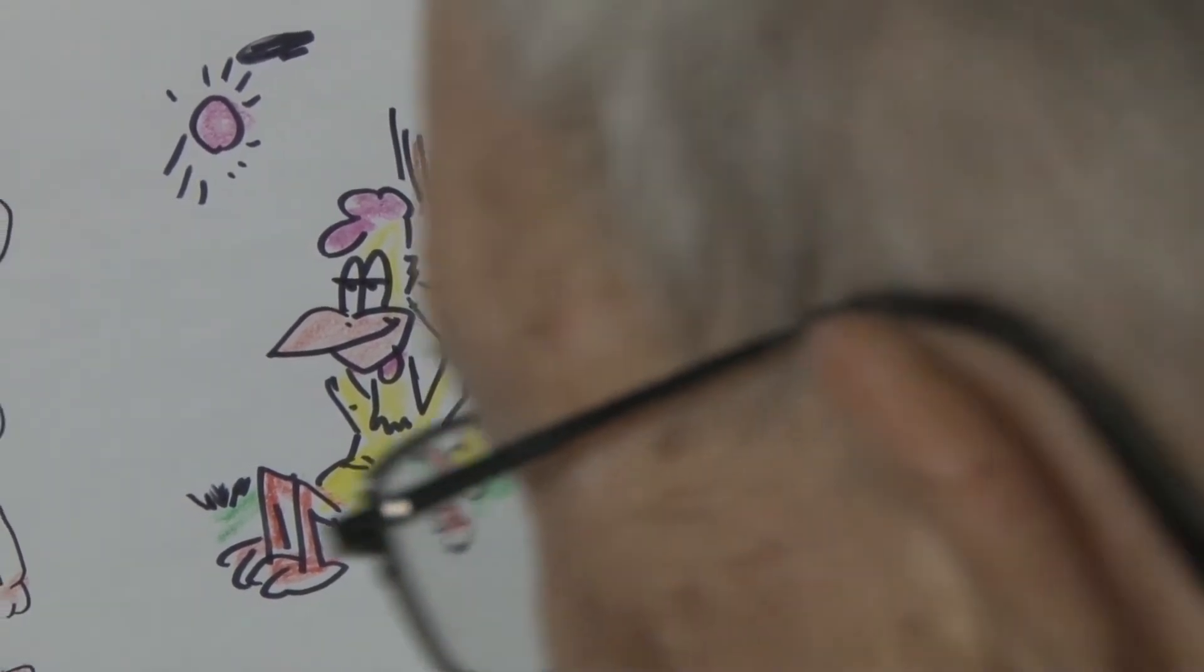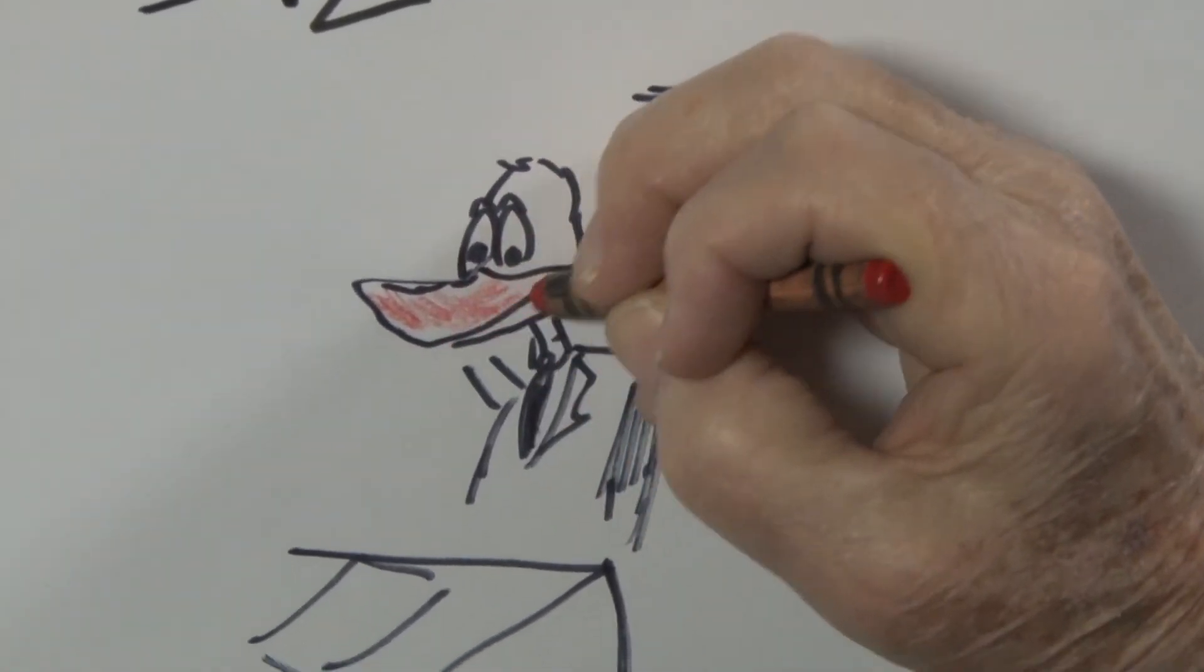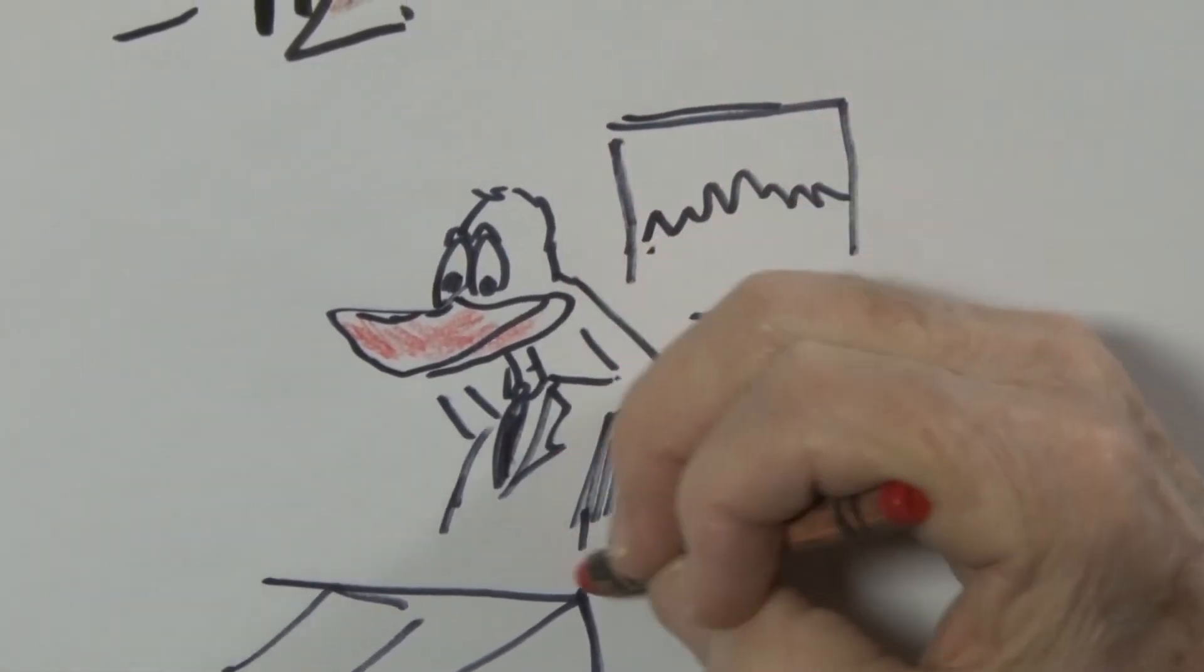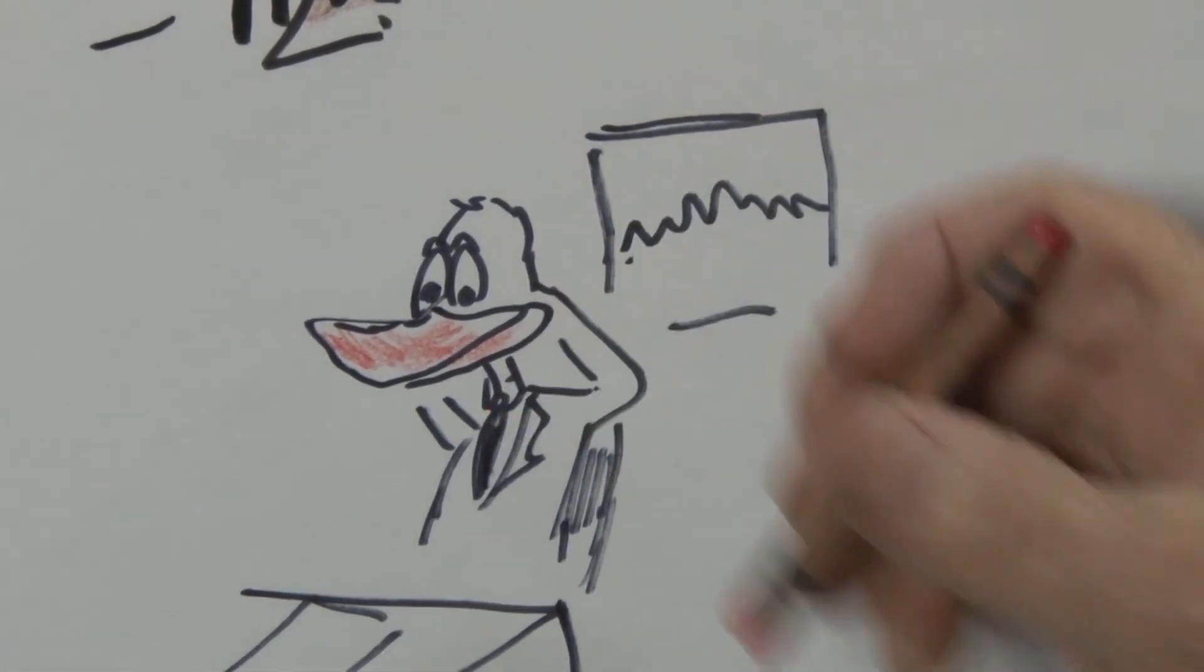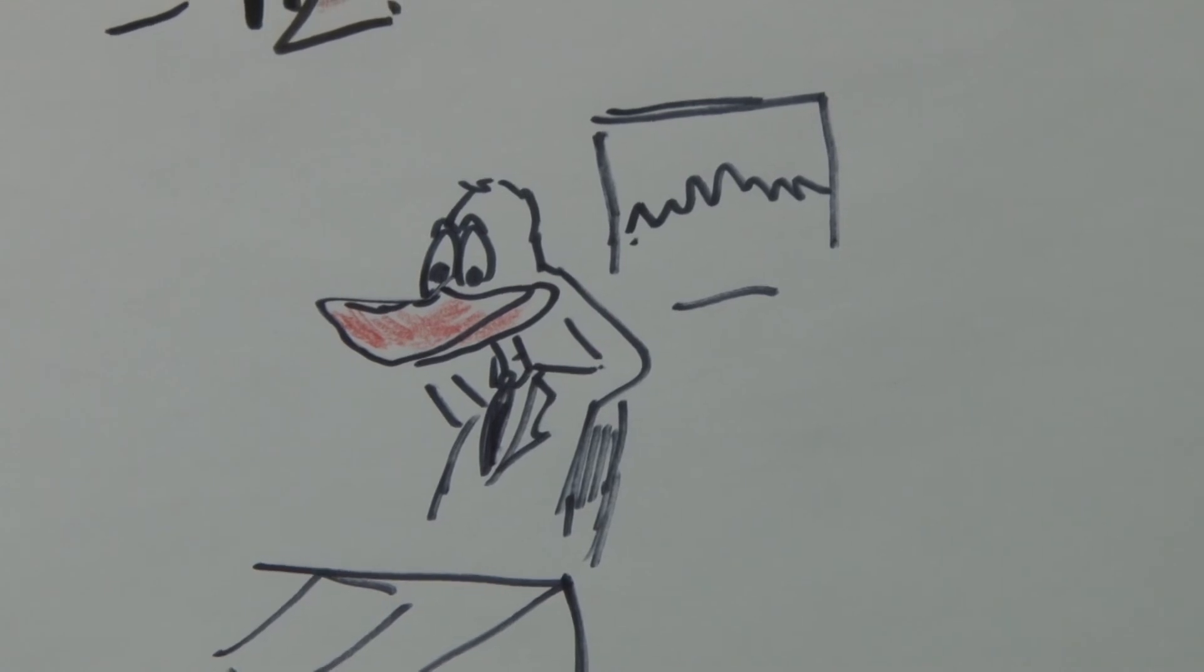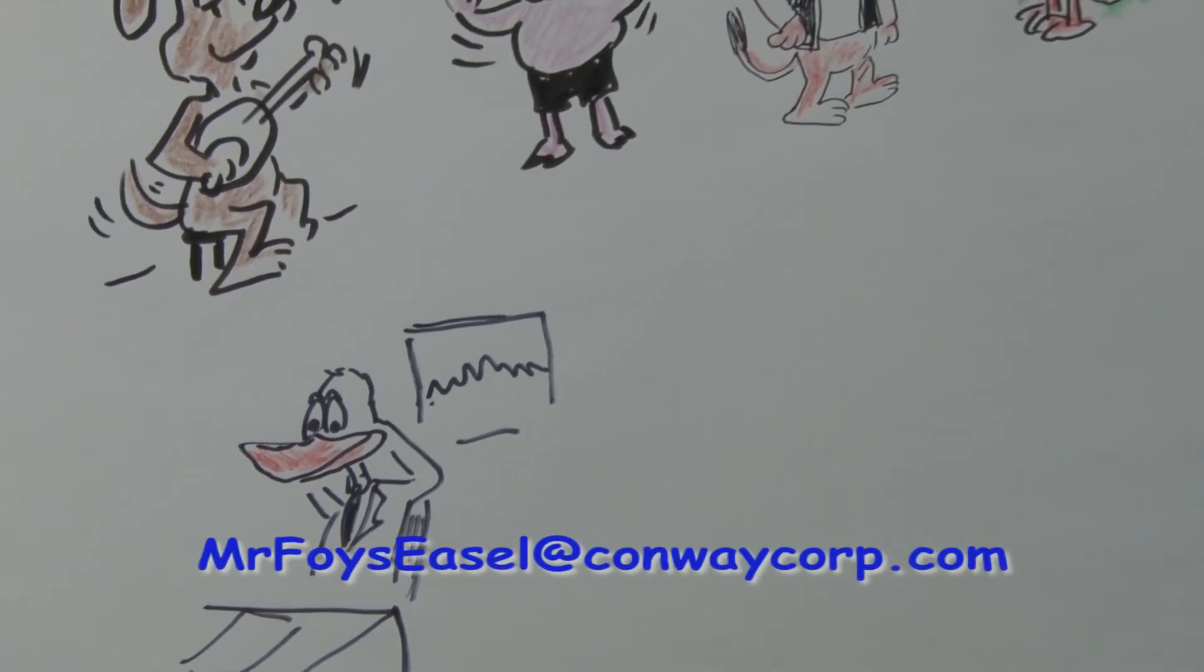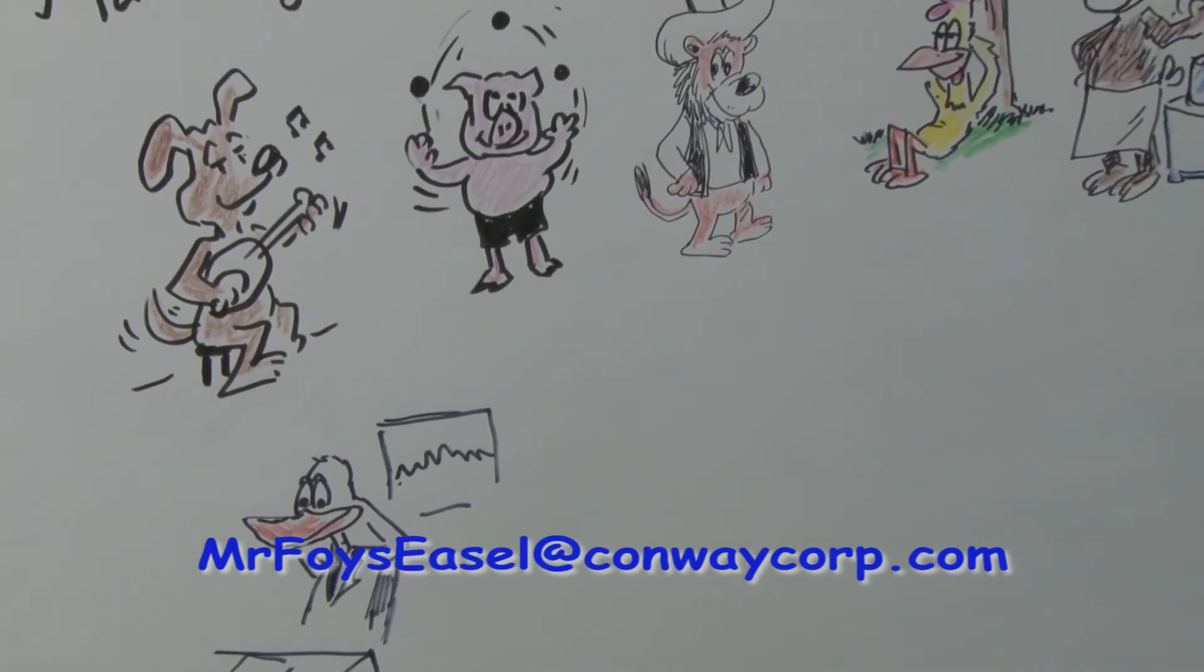Well, time is running short so we haven't much time to do the coloring on our duck. But anyway, he's got an orange bill and he does look self-important, doesn't he? Well, that's all the time we have. Tune in again for Mr. Foyer's Easel.